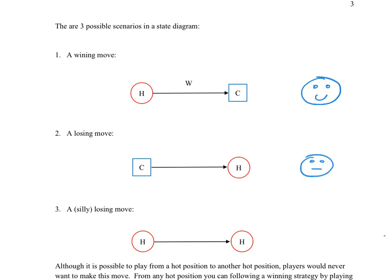The final way of possibly playing within a state diagram is from a hot position to a hot position. If you did this, you would really not want to make that choice — it means you could have played from a hot position and made a winning move, but instead you made a mistake and played into another hot position, giving your opponent the win. You'd be unhappy because you gave up a win you could have had.